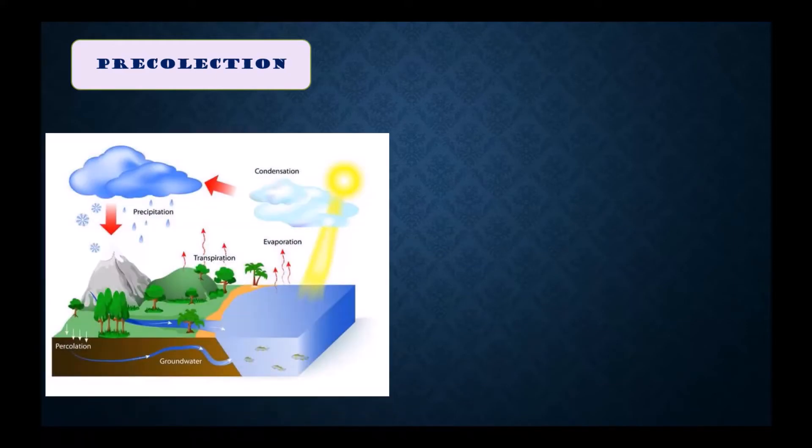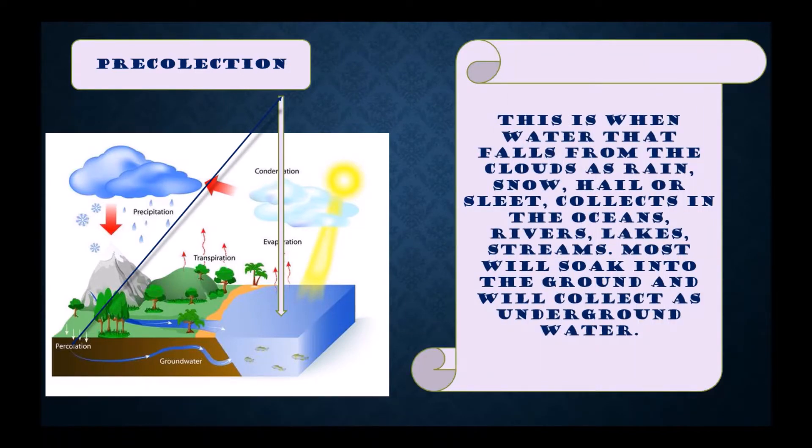Last one is collection. This is when water that falls from the clouds as rain, snow, hail, or sleet collects in the ocean, rivers, lakes, streams. Most will soak into the ground and will collect as groundwater.